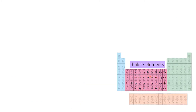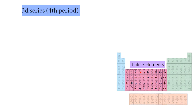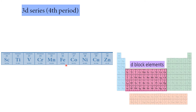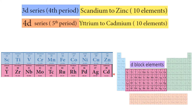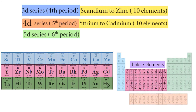In the periodic table, we can see the 3d series, 4d series, and 5d series. The 5d series goes from lanthanum to mercury. So the d-block series includes the 3d, 4d, and 5d transition series, each containing 10 elements.